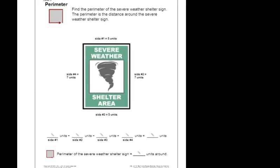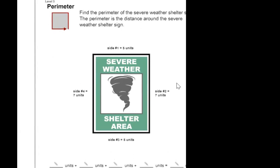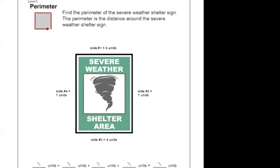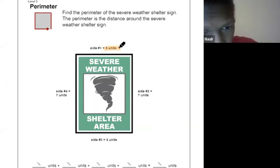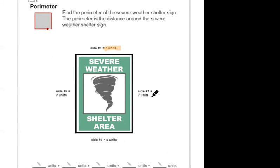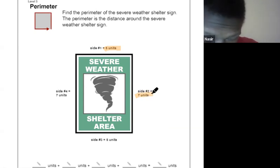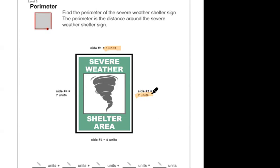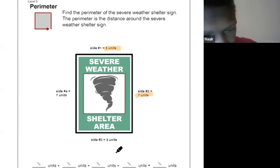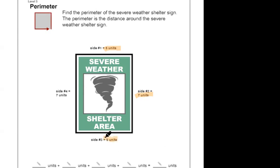So we've got to find the perimeter of this shape. What are my side lengths? What's side number one? Five — that's right. What's side number two? Seven. What's side number three? Five.